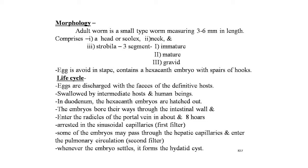Life cycle: eggs are discharged with the feces of the definitive host, swallowed by the intermediate host or human beings. In the duodenum, the hexagonal embryos hatch out, bore through the intestinal wall, and enter the radicles of the portal vein. Within about eight hours they are arrested in the sinusoidal capillaries — the first filter. Some embryos may pass through the hepatic capillaries into the pulmonary circulation — the second filter — and cause hydatid cyst of the lungs, which is rare.